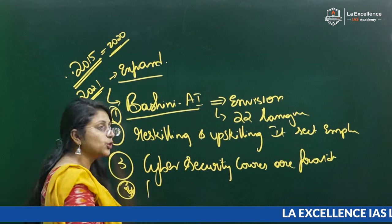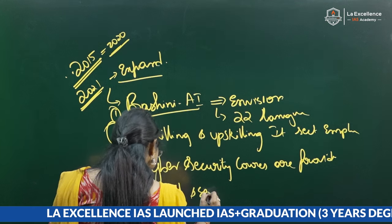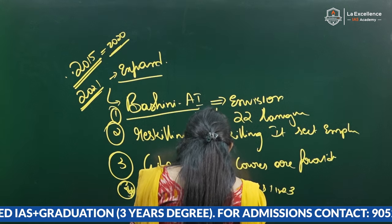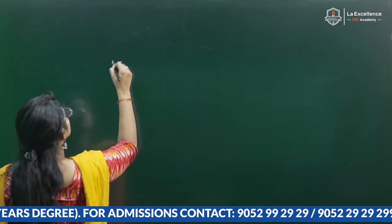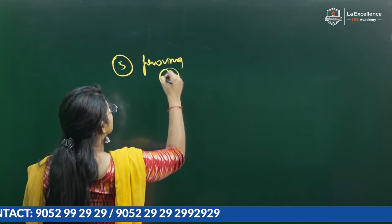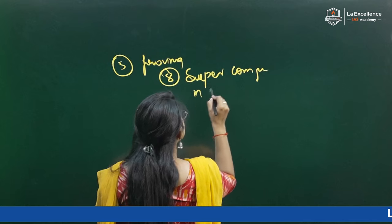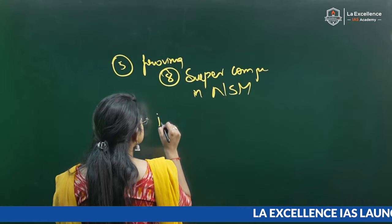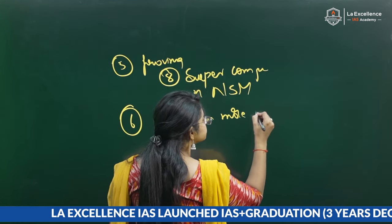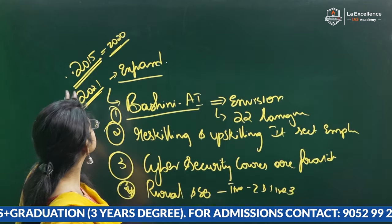Further post-2021 expansions include funding support given to startups solving problems related to rural and semi-urban areas, especially in tier 2 and tier 3 cities. Additionally, 8 extra supercomputers are being added under the National Supercomputing Mission. India has also integrated more than 200 sites into the National Cyber Security Coordination Center. These are the initiatives added after 2021.